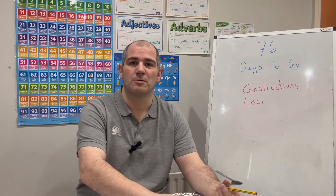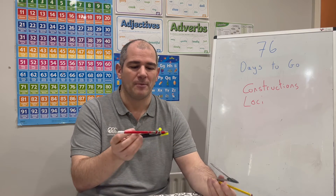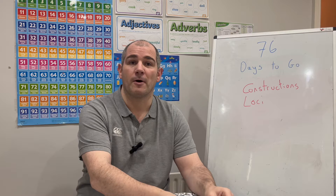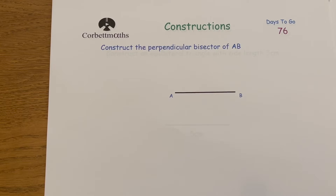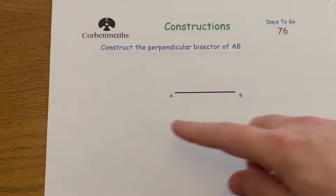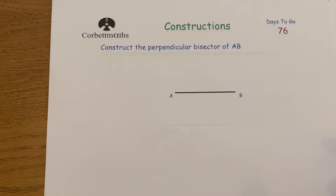I've got a couple of compasses and certain ones that I prefer. Let's get started. So the first construction we're going to look at is the perpendicular bisector. Here we've got a straight line AB and we're going to construct the perpendicular bisector of the line AB.